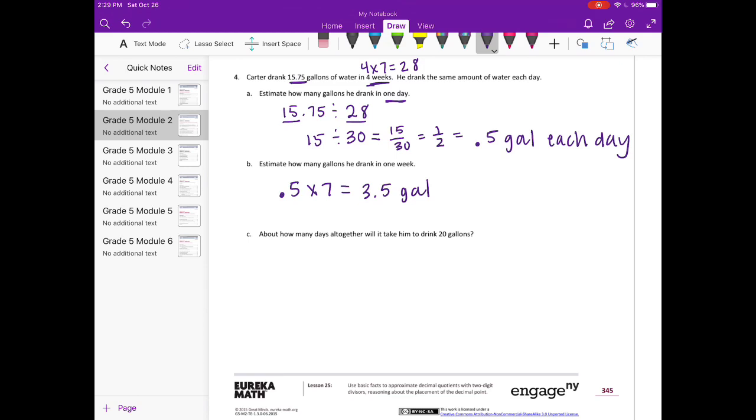How many days altogether would it take him to drink 20 gallons? If he's drinking 0.5 gallons each day, how many days to get to 20 gallons? How many 0.5's or halves in 20? That would be 40. So it would take 40 days.